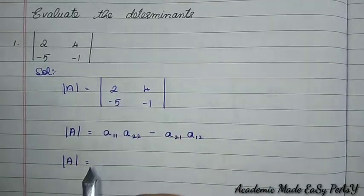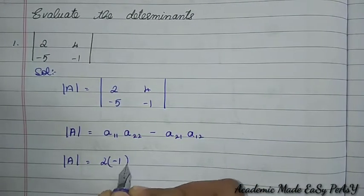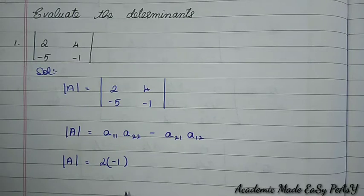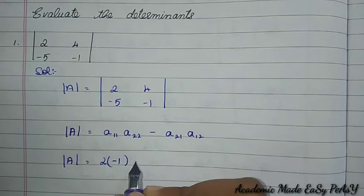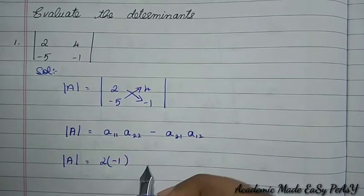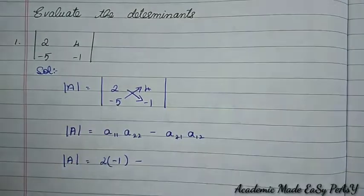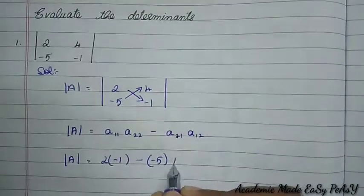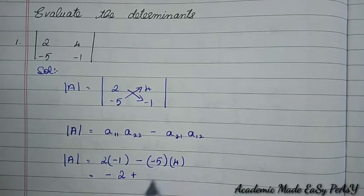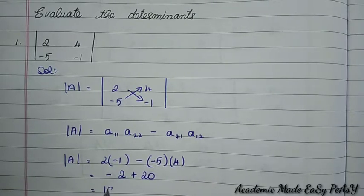So a₁₁ is 2, a₂₂ is −1, a₂₁ is −5, and a₁₂ is 4. Using the x method: 2 × (−1) − (−5) × 4 = −2 − (−20) = −2 + 20 = 18. So the answer for Question 1 is 18.